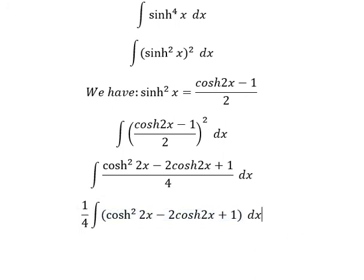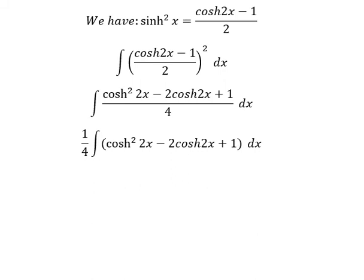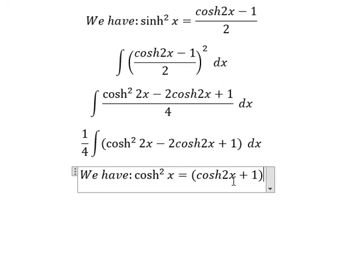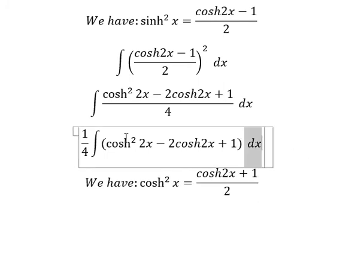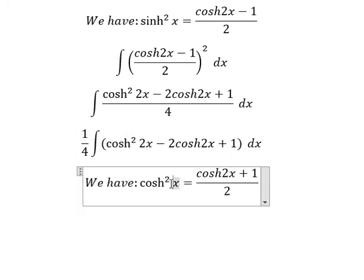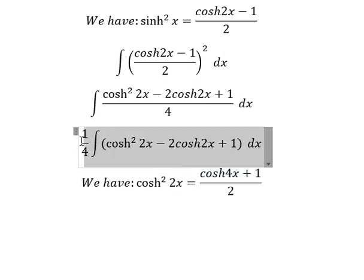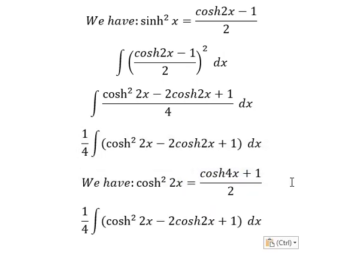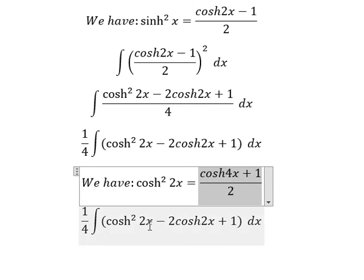So we have the second formula here, that's about cosh²x equals cosh2x plus 1 over 2. This is about 2x, so if I put 2x in here this one should be about 4x. So I will put this one in here.